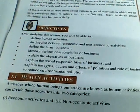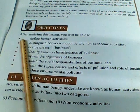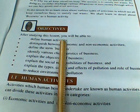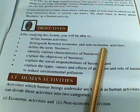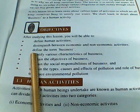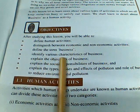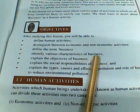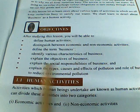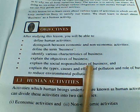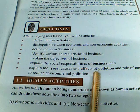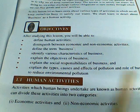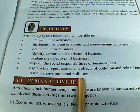Now in this chapter, let us understand the objectives. After studying this lesson, you will be able to define human activities, distinguish between economic and non-economic activities, define the term business, identify various characteristics of business, explain the objectives of business, explain the social responsibility of business, and explain the types, causes and effects of pollution and the role of business in reducing environmental pollution.